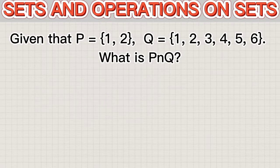Given that set P is having members 1 and 2, while set Q is having members 1, 2, 3, 4, 5, 6, what are the members of set P intersection Q?